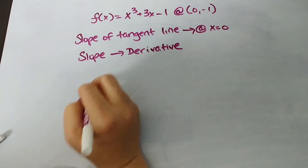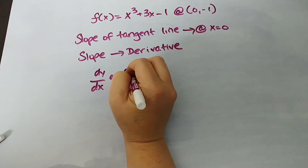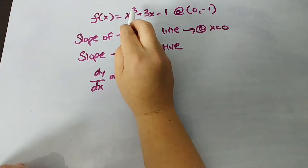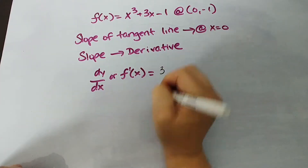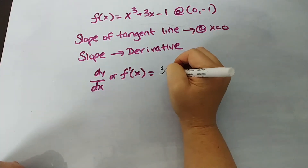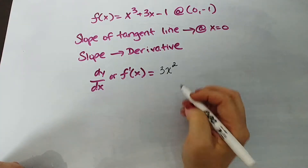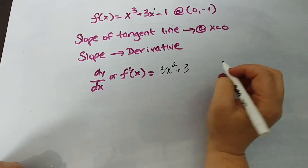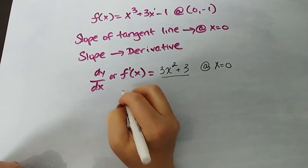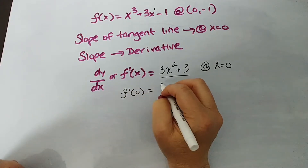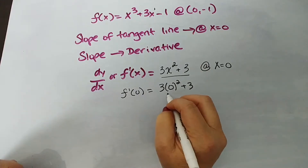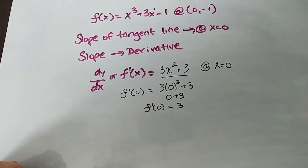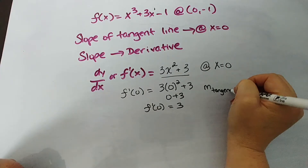We're going to use our power rule, whether you use dy/dx or f prime of x. The power rule says if you have a polynomial function, you take the exponent, bring it down, and multiply it by anything that's already there. So 3 times x cubed becomes 3x squared, plus — this 3x is really 1 times 3, which gives 3, and x to the zero is simply 1, so plus 3. That is our derivative. But we want the derivative at x equals 0, so we find f prime of 0: 3 times 0 squared plus 3 equals 0 plus 3. So the derivative at 0 is 3. That means the slope of the tangent line is 3.